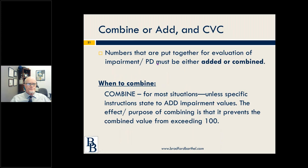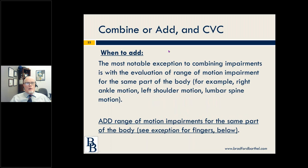Combine versus add — most of the time when you're putting numbers together you're combining rather than adding. The most notable exception: if you're looking at range of motion for the same part of the body, then you're adding. The tables are constructed with values that consider you're going to be adding rather than combining. For the shoulder, there are six different motions on three different figures within chapter 16 for evaluating loss of motion — each of those upper extremity impairment values would all be added and then converted to whole person impairment.